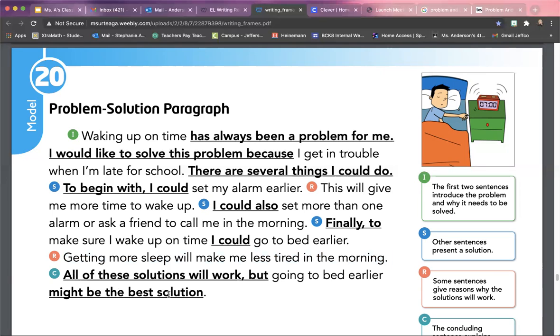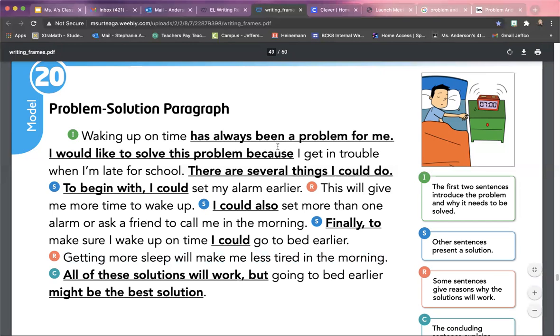And then at the end he writes his little conclusion. All of these solutions will work, but going to bed earlier might be the best solution. So at the end of this he picks one option that he thinks is the best. So if you notice in the beginning he talks about how waking up on time has always been a problem. At the end he's talking about how to solve his problem, which will be going to bed earlier. So they're really tied together. He has this problem, he has a solution at the end, and then in the middle he gives all of these possible solutions.